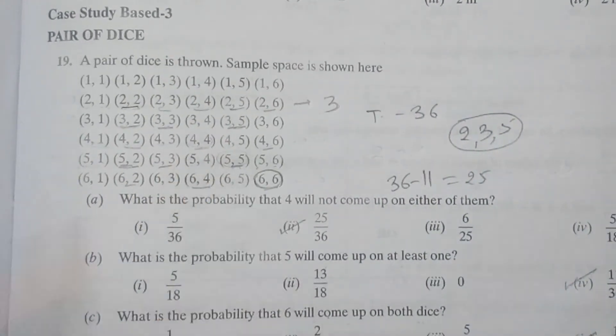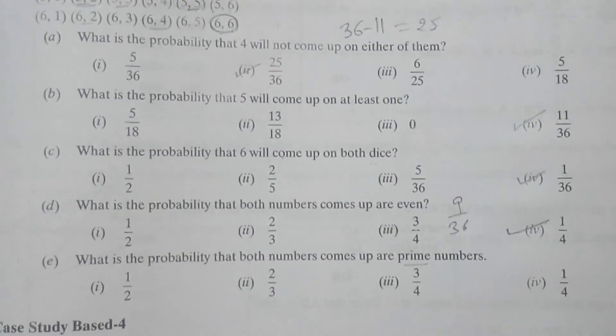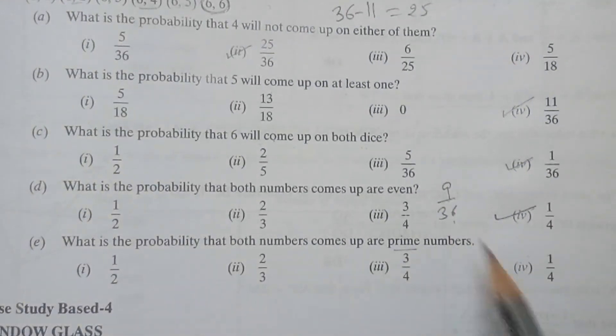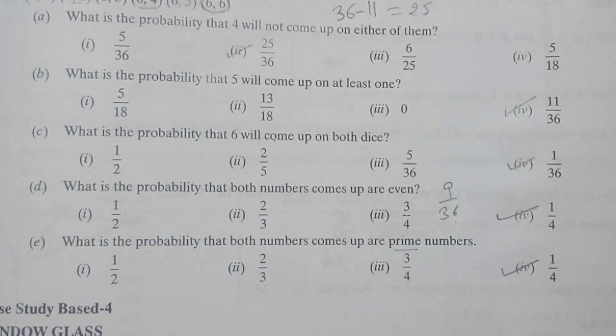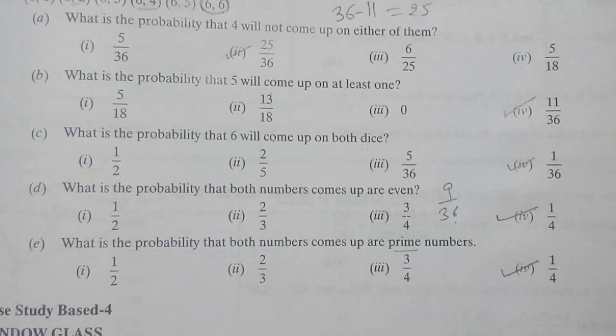So total 9 times the prime numbers are coming. So here also the probability will be 9 by 36 which equals 1 by 4. So these are the answers.